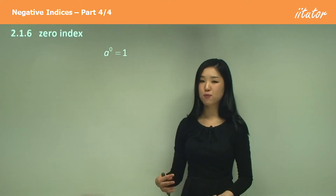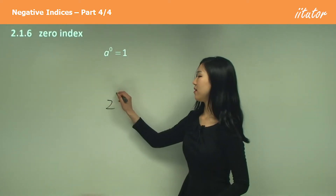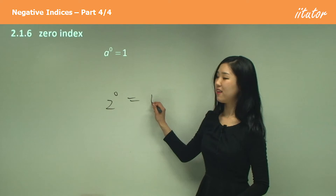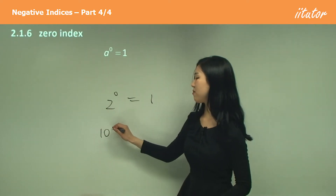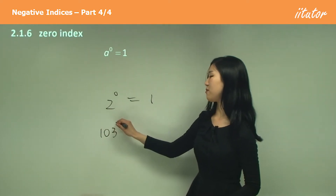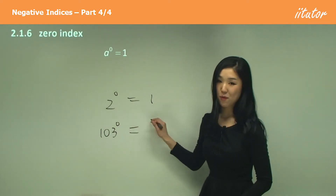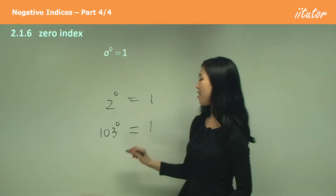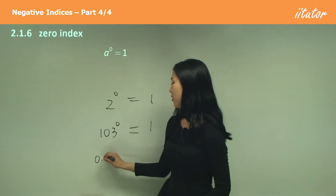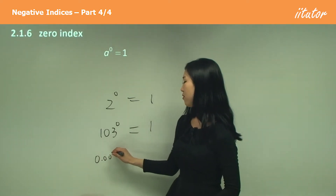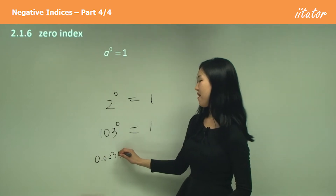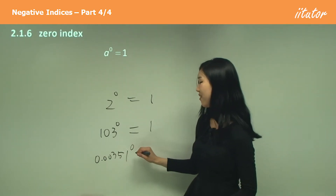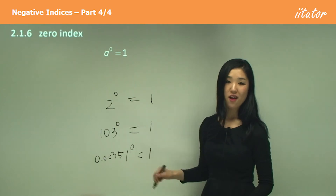So if I have two to the power of zero, this will be one. If I have 103 to the power of zero, this will also be one. If I have 0.00351 to the power of zero, this will also be one.